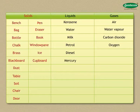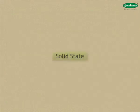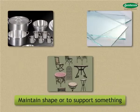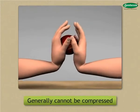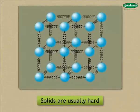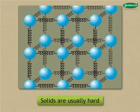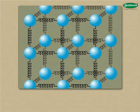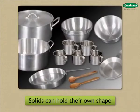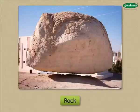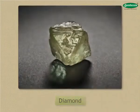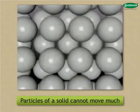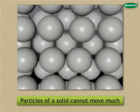Now let us understand each state of matter one by one. Solids are used when we need something to keep its shape or to support something, because they have a fixed shape, remain in the same place where they are kept, and generally cannot be compressed. Solids are usually hard since their particles are closely packed together. Closer the particles, harder the substance. The particles of a solid cannot move much. This is one of the physical characteristics of solids.